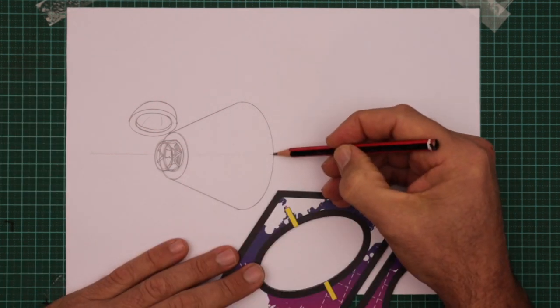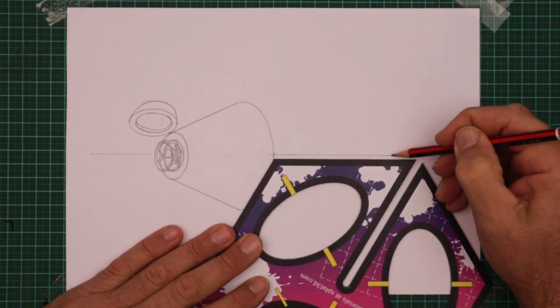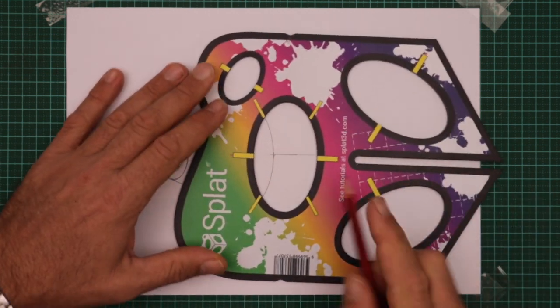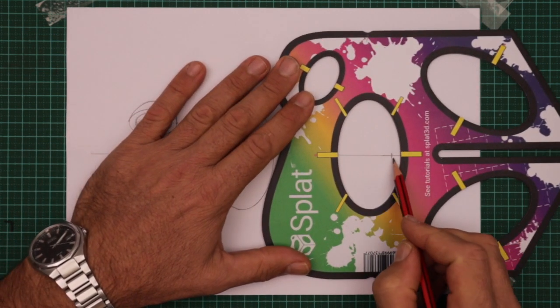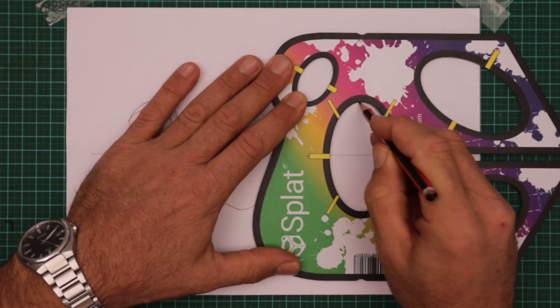Now for the back section. From the end of the capsule come across not quite one full length. Back off just a little bit and we're going to line up those two marks of the ellipse on the centre line. And draw half an ellipse.